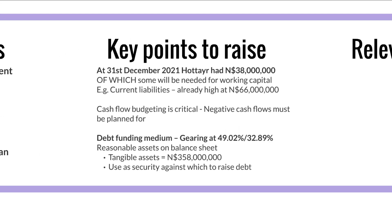Some key points to raise from the pre-seen: using these statistics will help get you extra marks. The examiner has specifically said they like students to use pre-seen information and wonders why students don't use more of it. As of 31st December 2021, Hot Air had 38 million Nordland dollars in the bank. Some of that will be needed for working capital and salaries — there are nearly 9,000 staff members, and current liabilities including trade payables and tax liabilities are already very high, far higher than the cash in the bank.